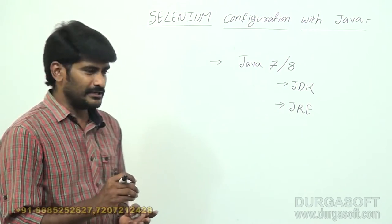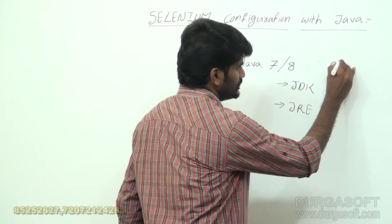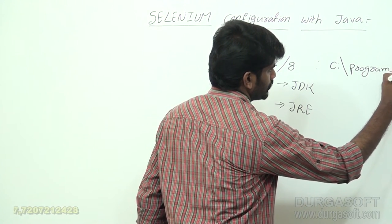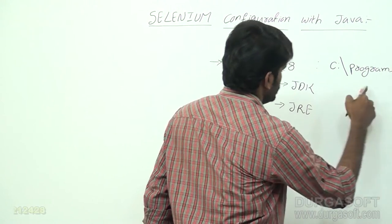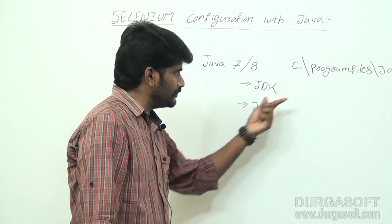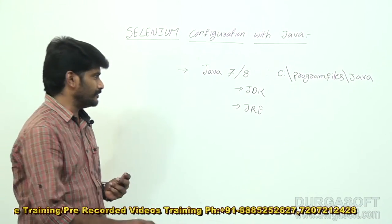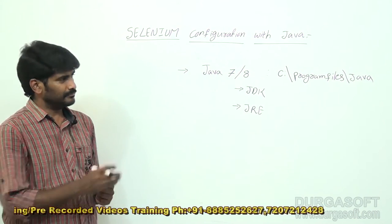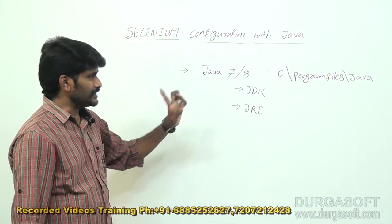JDK means Java Development Kit, JRE means Java Runtime Environment. Once we install Java, by default in every machine it is available in C Program Files. It creates one folder Java, in that these two files are available. If these two are available in your machine then Java is installed successfully. If it is not there, you can Google it and download the JDK file and install it.